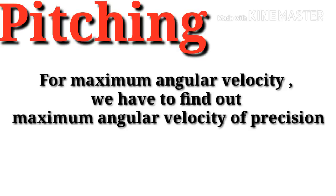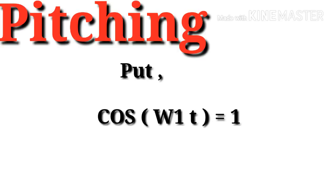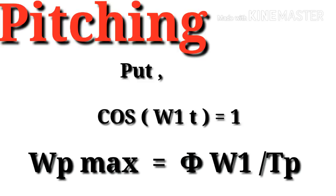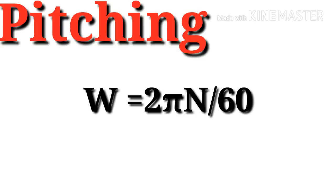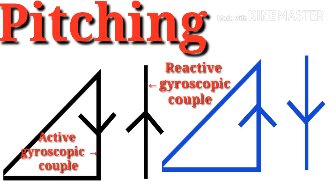For the maximum angular velocity of precession, set cos(ω₁·t) = 1 (maximum value in trigonometry), giving ωp_max = φ·ω₁ = φ·(2π/Tp). The formula for ω is still 2πN/60. So the gyroscopic couple for pitching is C = I·ω·ωp, where ωp = φ·ω₁·cos(ω₁·t).